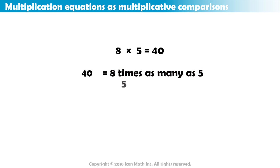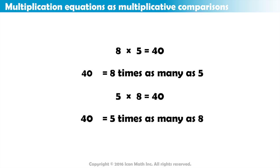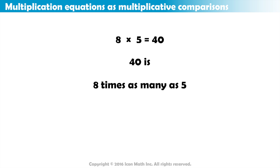And also, 40 is equal to 5 times 8, so this means that 40 is 5 times as many as 8. To summarize, the equation 8 times 5 equals 40 means that 40 is 8 times as many as 5 and 5 times as many as 8.